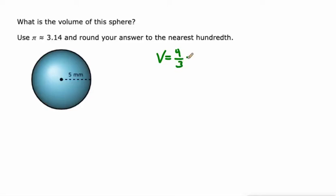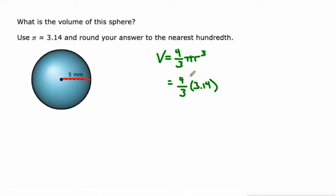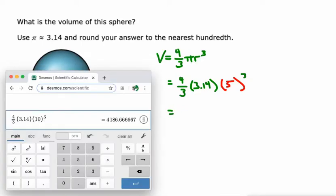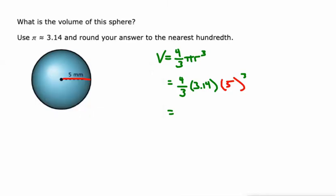Four thirds pi r cubed — memorize that formula. Four thirds times 3.14 times... our radius this time is 5, so 5 cubed. All we got to do is go back and change this 10 to a 5. 523.33. Again, millimeters cubed.